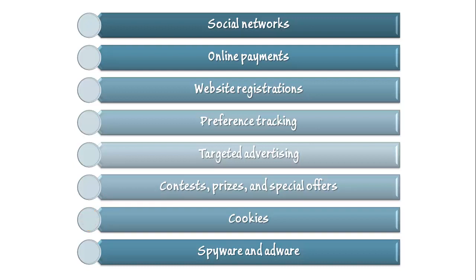Internet technologies provide a conduit for the rapid dissemination of spyware and adware programs and mobile apps. Spyware may clandestinely search a user's computing device for sensitive or private information such as credit card numbers, passwords, email addresses, or bank accounts, which may then be relayed to a malicious party without the user's knowledge or consent. Similarly, adware may clandestinely search a user's computing device for sensitive data that can be used for the purpose of delivering targeted advertising.